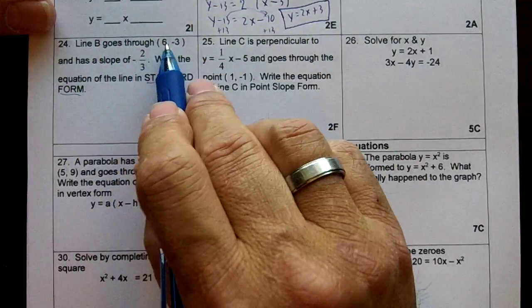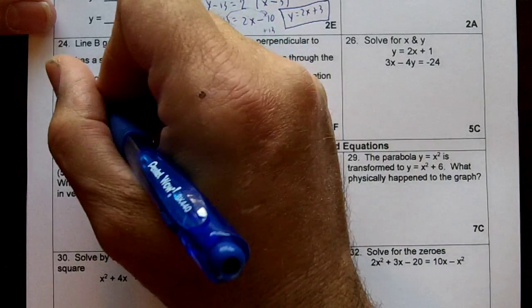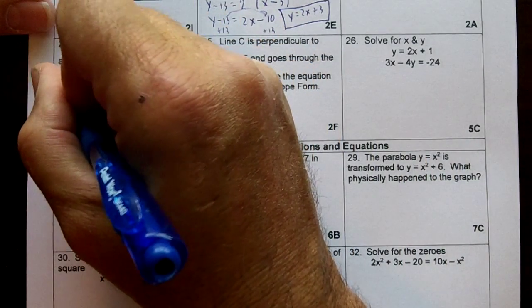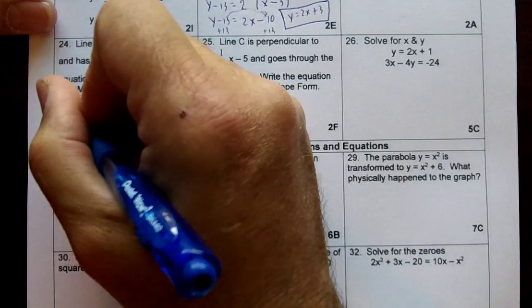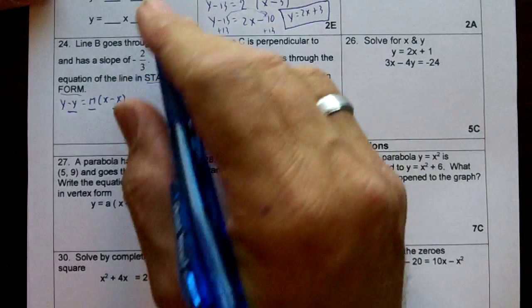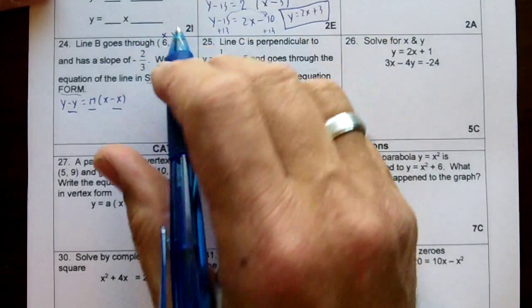So we are given a slope and a point. We're going to use point-slope first. So we're going to have y minus y equals m(x minus x). We're going to replace y, m, and x. So this is our x, this is our y.